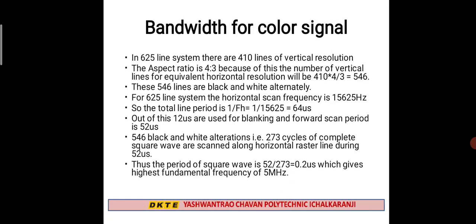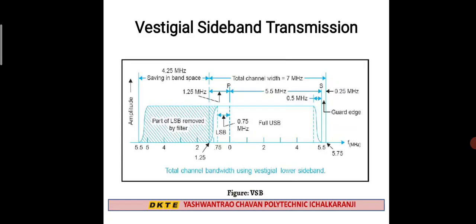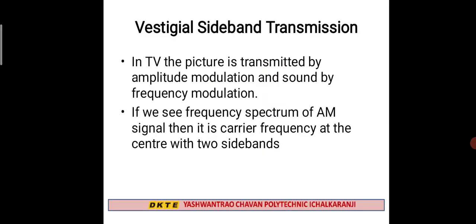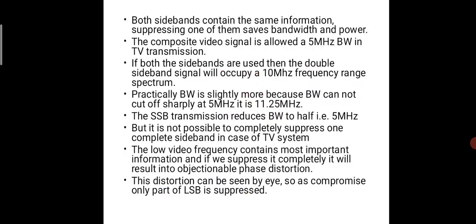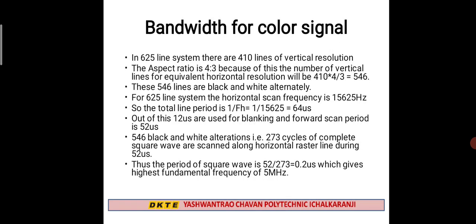These are the two important points: vestigial sideband transmission and bandwidth for the color signal. In VSB transmission, we transmit the amplitude modulation signal using the upper sideband, carrier, and some part of the lower sideband — since full suppression causes phase distortion. The bandwidth for the color signal is 5 MHz. We will see the next part in the next lecture. Thank you.